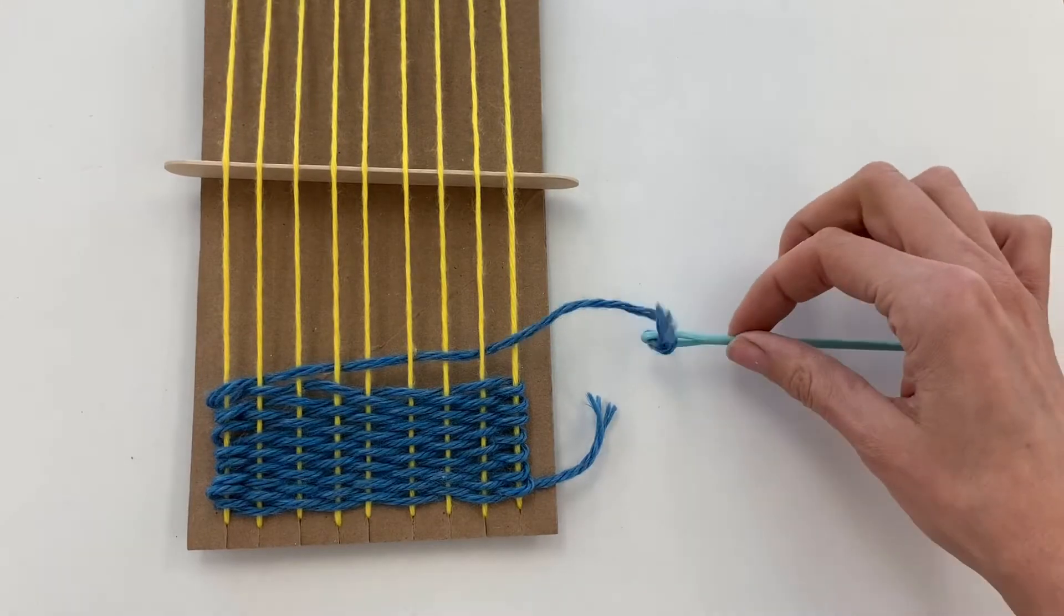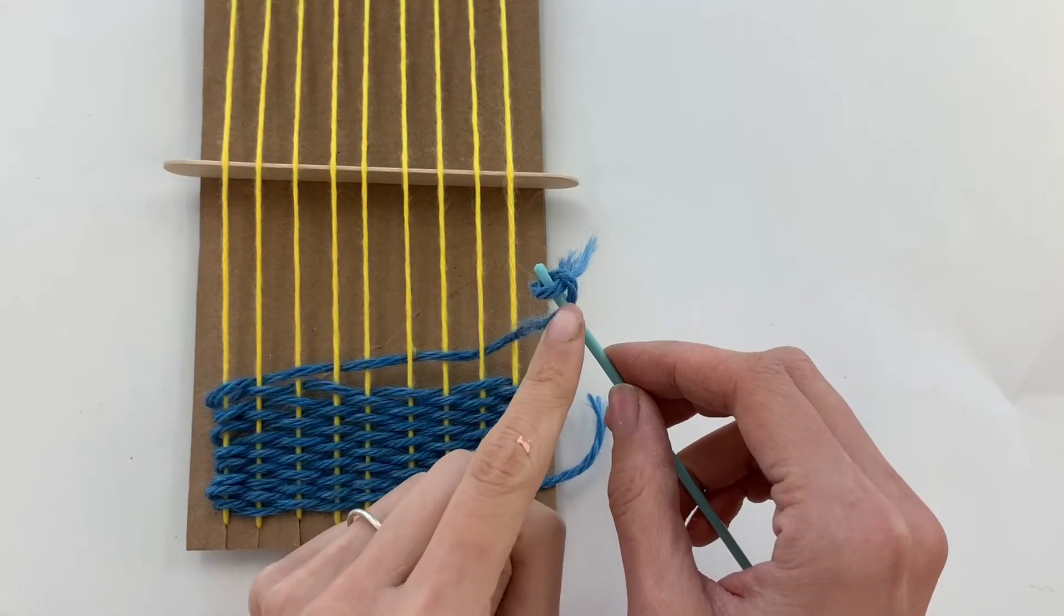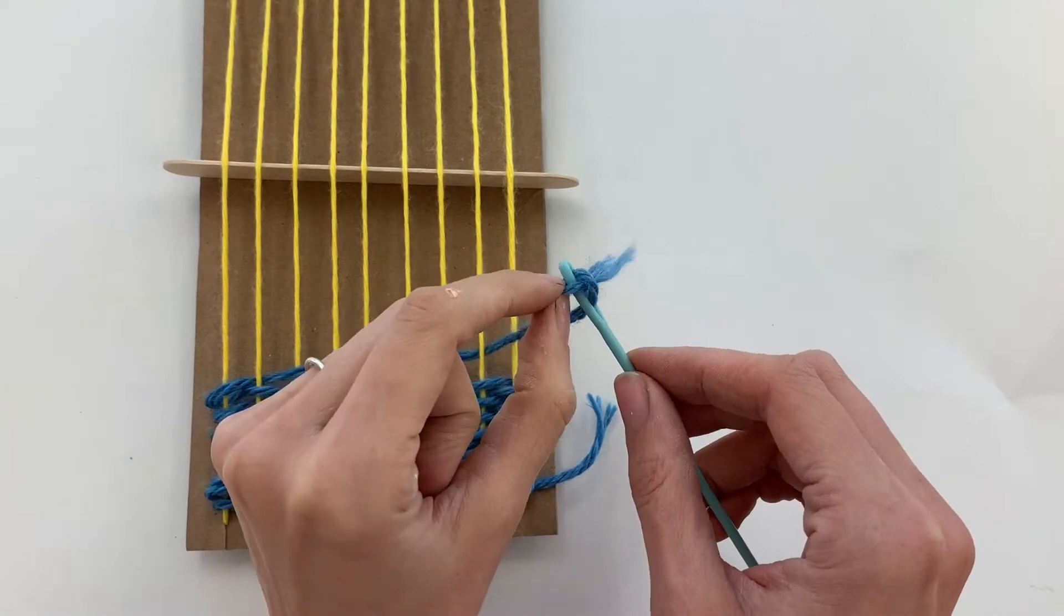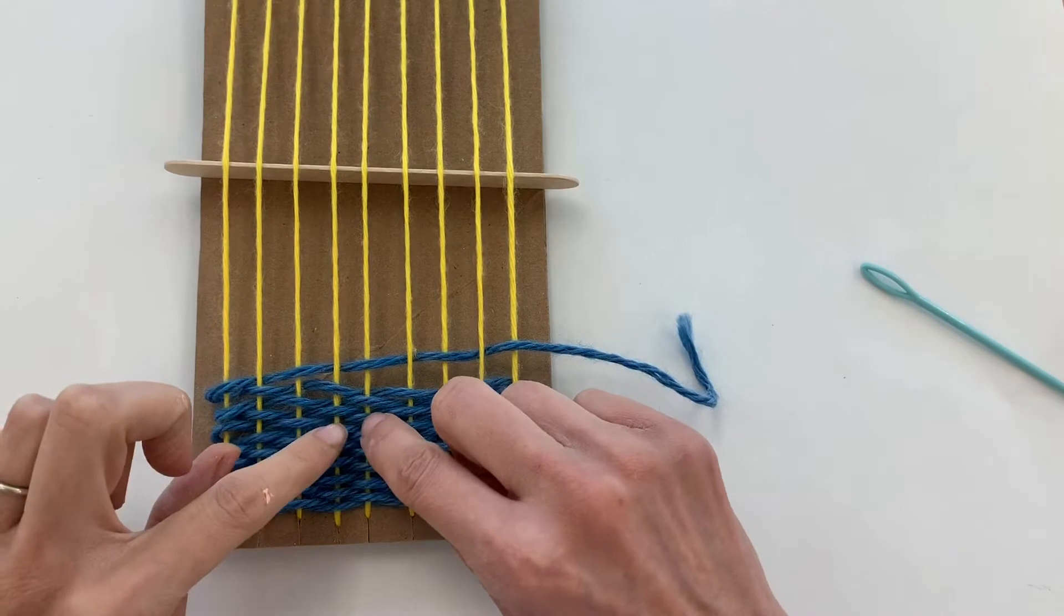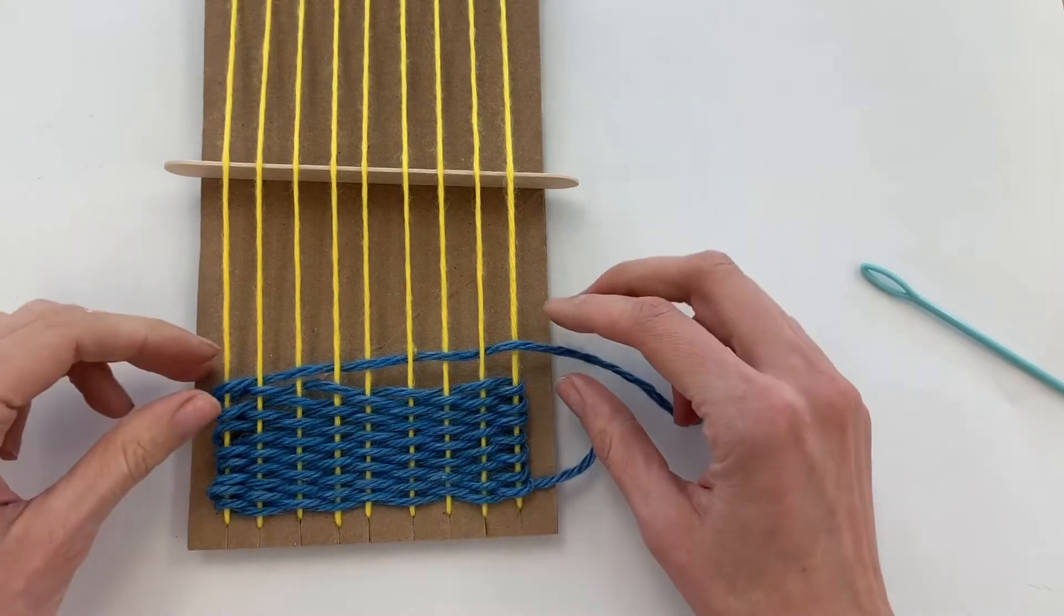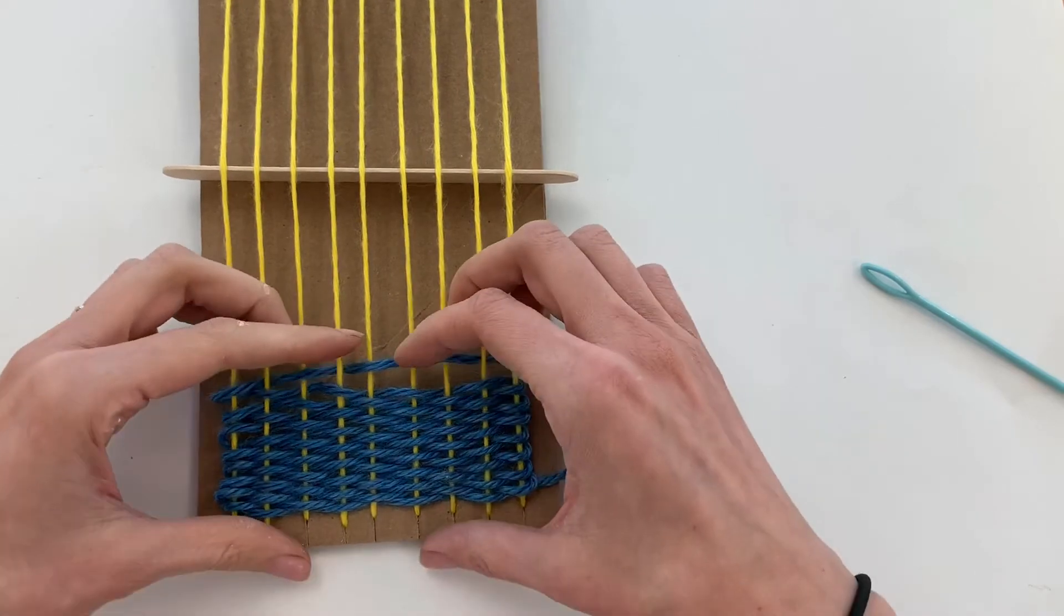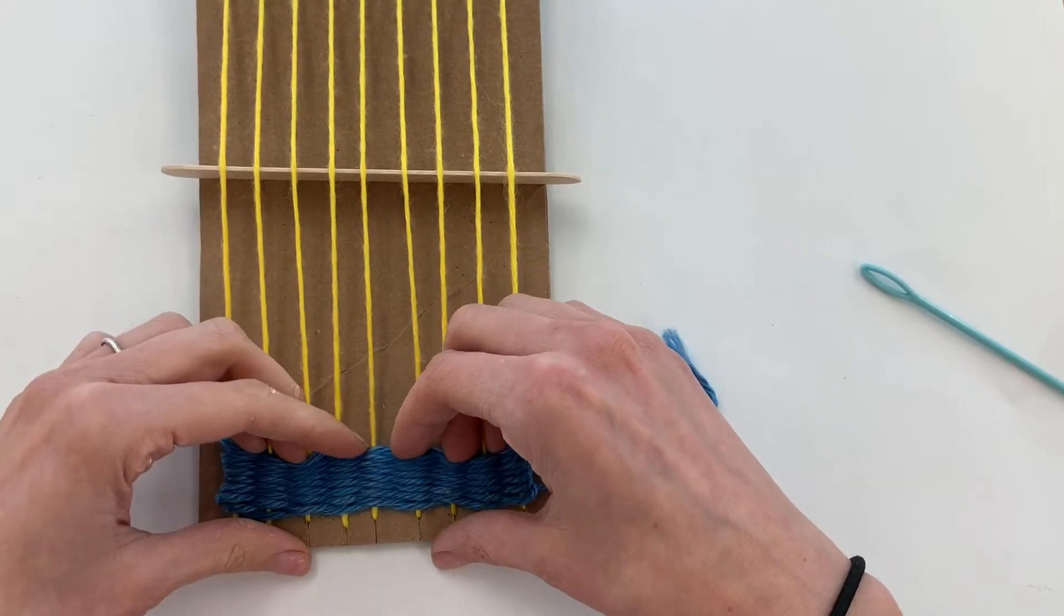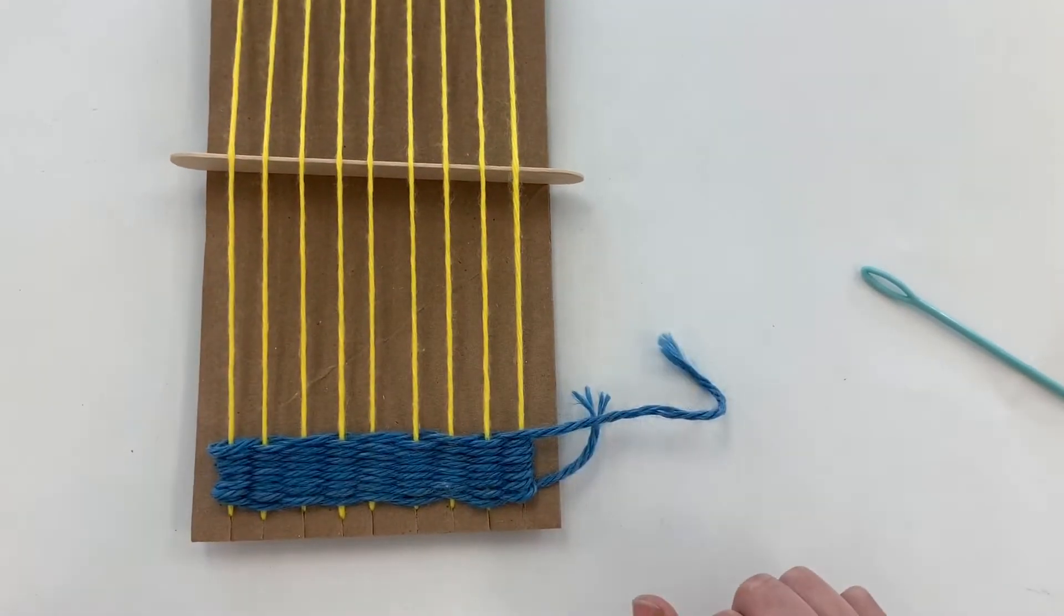Once I get to the end of my string here, then I can just find the part that's wrapped around my needle, the eye of the needle, and pull on it and it should easily come off. I also notice that I see all these yellow warp strings through my weaving. We don't want to see that. We want to make sure that our weaving stays really nice and tight. So every so often, we want to make sure that we press it so far down that we don't see any of those warp strings again.